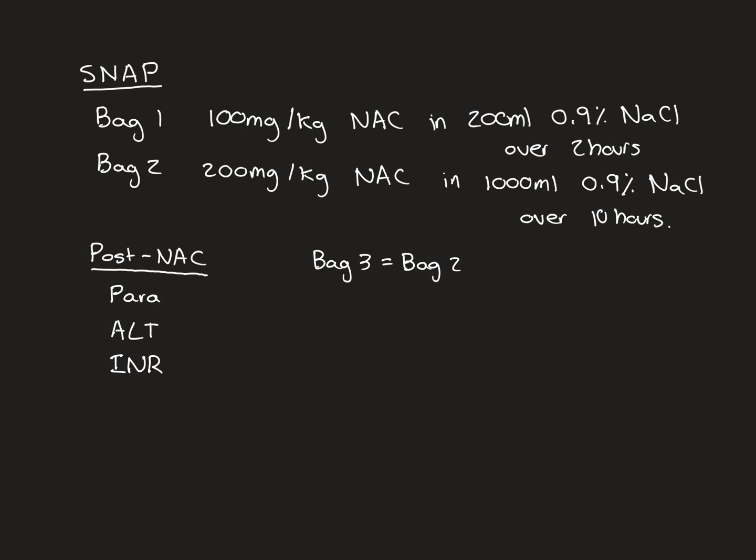If they still remain deranged at that point, you need to seek senior help, senior advice, consultant advice. In my experience, I've only ever seen one patient who had to have further bags of NAC after the fourth bag of NAC, and it was an extremely complicated case. It was complicated by non-compliance. The patient was absconding and going home and taking more paracetamol and then having to be brought back by the police. It was incredibly complicated, refusing cannulation, refusing blood tests, refusing the NAC. All the other cases where the patient has been compliant, I've never seen them get to that stage where they had to have a fourth bag of NAC, and then even after the fourth bag of NAC, the blood test was still deranged.